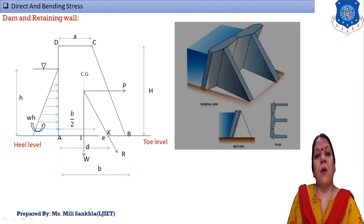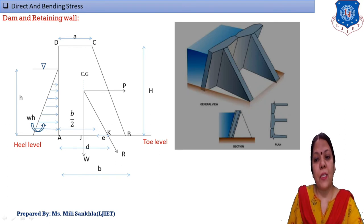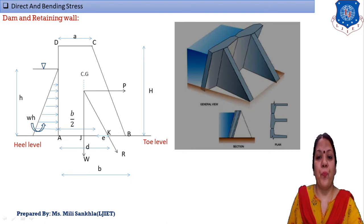Here I draw the side section of a dam. There are three figures: the first one is the plan of the dam, showing sections 1, 2, and 3. The second is the elevation (front view), and the third is the general view.